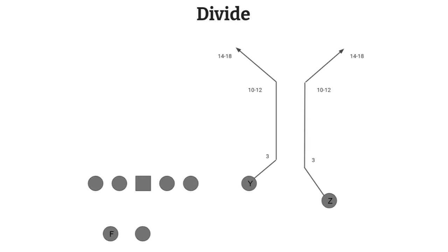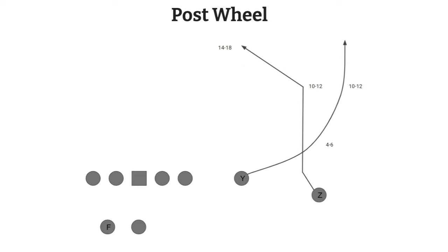The next concept is divide. Very similar to scissors, but instead of crossing each other, both receivers cut inwards then cut back outwards like corner routes. This is more useful against man coverage because the additional cut makes it harder for the cornerback to keep up, while still attempting to split the safety over the top. Finally, post wheel: the Z receiver runs a post route to pull the safety over the top, while the Y receiver on the wheel route sneaks in behind, finding space between zones to go down the field.